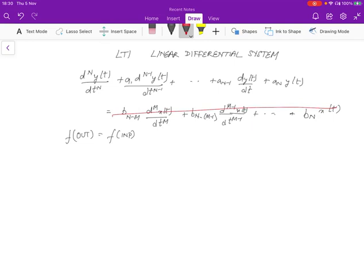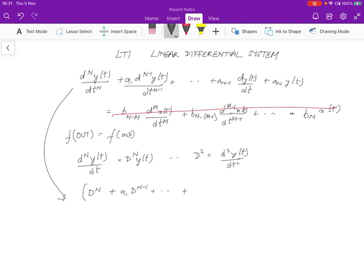I'm going to introduce one simplification where I'm going to represent d to the n yt by dt as d to the n, so that d square would mean d square yt by dt square. If you have this, then the left-hand side can be rewritten in a simpler notation as d to the n yt.